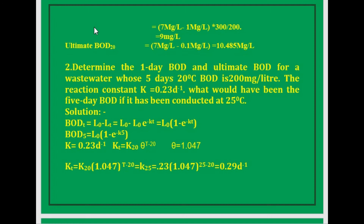One more problem on BOD and ultimate BOD: determine the 1-day BOD and ultimate BOD for a wastewater whose 5-day, 20-degree-centigrade BOD is 200 mg/L. The reaction constant K equals 0.23 per day. What would the 5-day BOD have been if conducted at 25 degrees centigrade? The solution is based on the formula: BOD_T equals L0 minus L_T, which equals L0 times (1 minus e to the power of minus KT). Substituting T equals 5: BOD5 equals L0 times (1 minus e to the power of minus K times 5), where K is 0.23 per day.